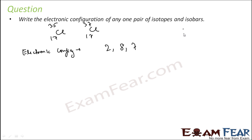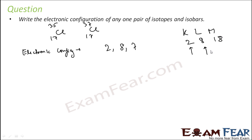For chlorine with atomic number 17, the configuration is K=2, L=8, M=7. K accommodates max 2, L accommodates max 8, and the remaining 7 go into M. So 2, 8, 7 is the electronic configuration for both chlorine isotopes.